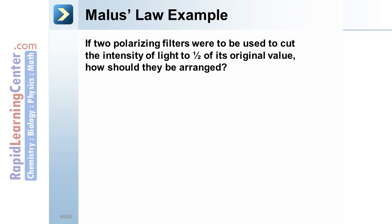Malus's law example. If two polarizing filters were to be used to cut the intensity of light to one half of its original value, how should they be arranged?